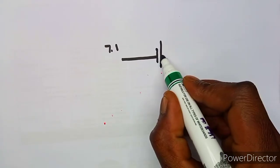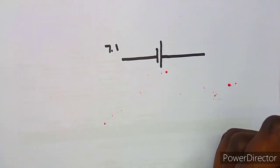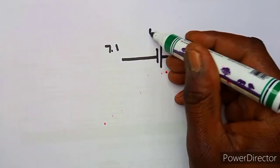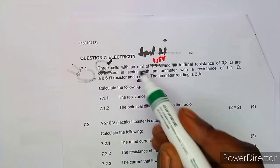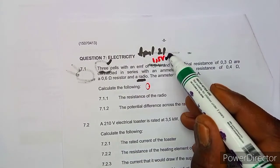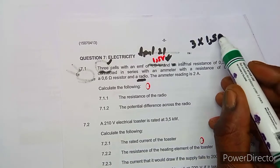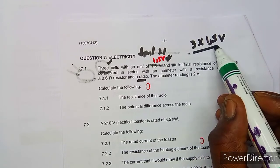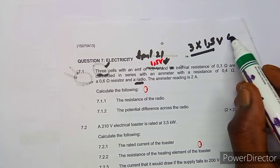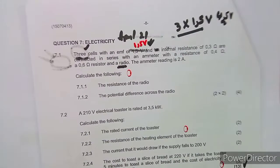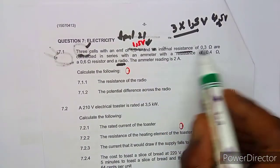We can treat this as a single equivalent battery. The total EMF is taken from the three cells in series, each having 1.5 volts. So it's three cells times 1.5 volts, which gives us a total EMF of 4.5 volts.